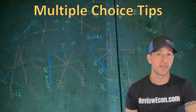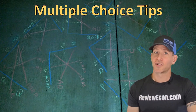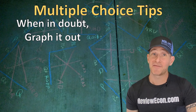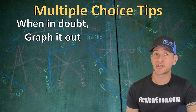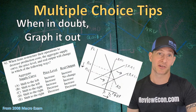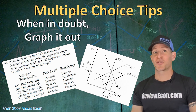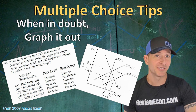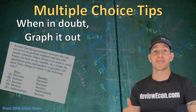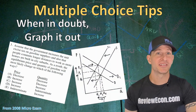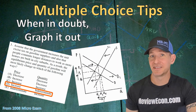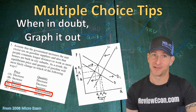Now, some tips for the multiple choice section. When you read a question and you're not sure of the answer, when in doubt, graph it out. Multiple choice questions that refer to a graph can often be made much easier if you sketch it out and see what happens. For example, a rightward shift of the short-run aggregate supply curve will lower the price level and increase real GDP — you'll know that if you graph it out. With a supply and demand graph, graphing it out shows the price will definitely increase, but the equilibrium quantity is indeterminate.